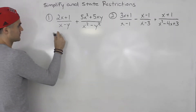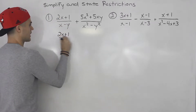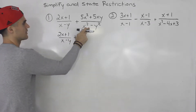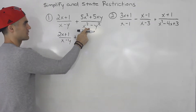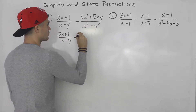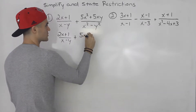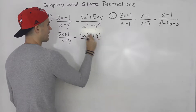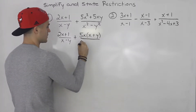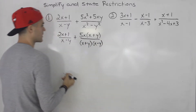Starting with number one, notice 2x plus 1 over x minus y — that can't be factored any further. But for the second rational expression, we can factor both the numerator and denominator. Factoring the numerator, we take out 5x from both terms, leaving x plus y. And x squared minus y squared is a difference of squares, giving us x plus y over x minus y.